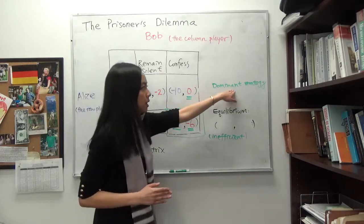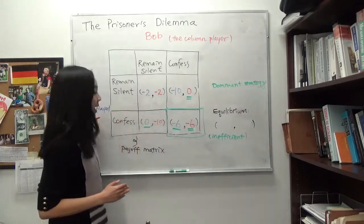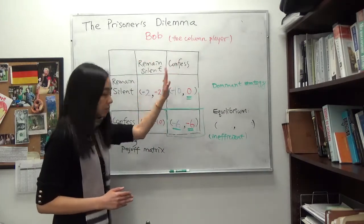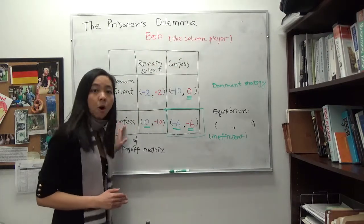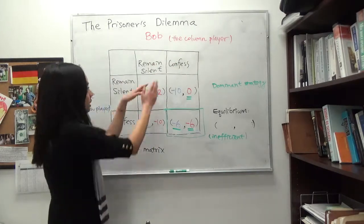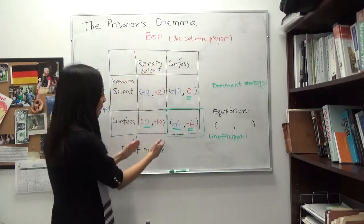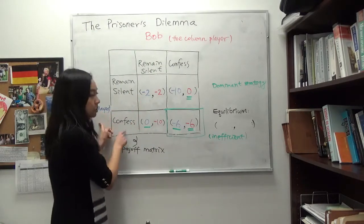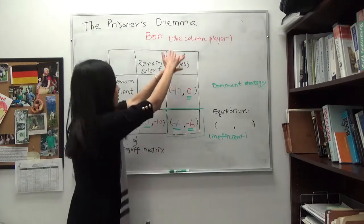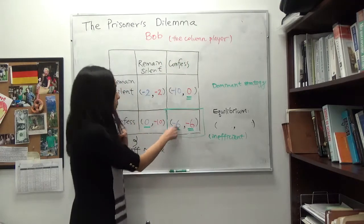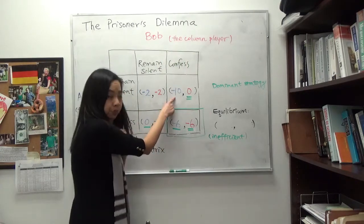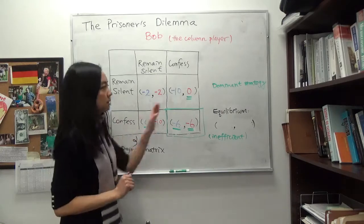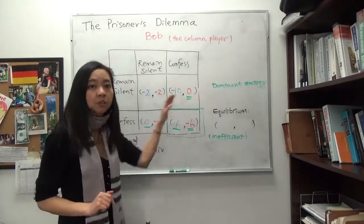We call this a dominant strategy for Alice, because it doesn't matter what Bob does — confess is always a better choice for Alice. Given Bob remains silent, 0 years is better than 2 years, so Alice would choose to confess. And given Bob confesses, 6 years is better than 10 years in prison, so Alice would still choose to confess. So confess is a dominant strategy for Alice.